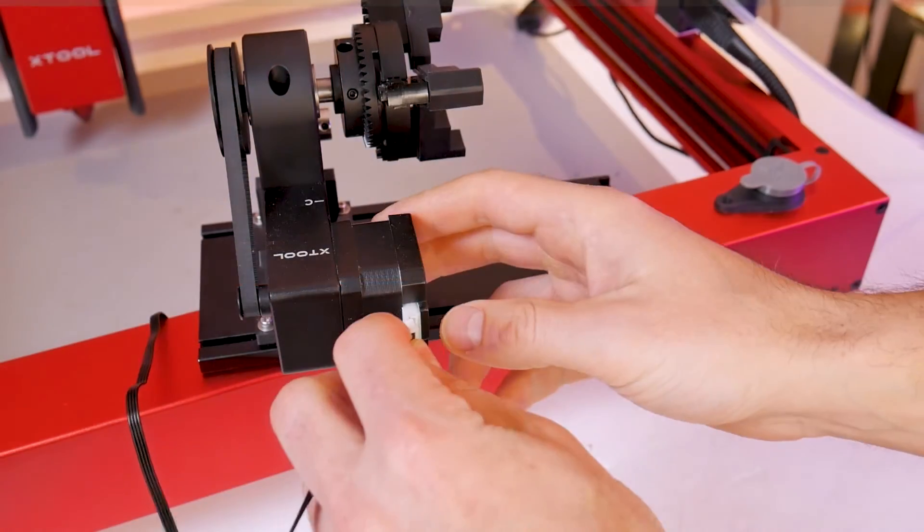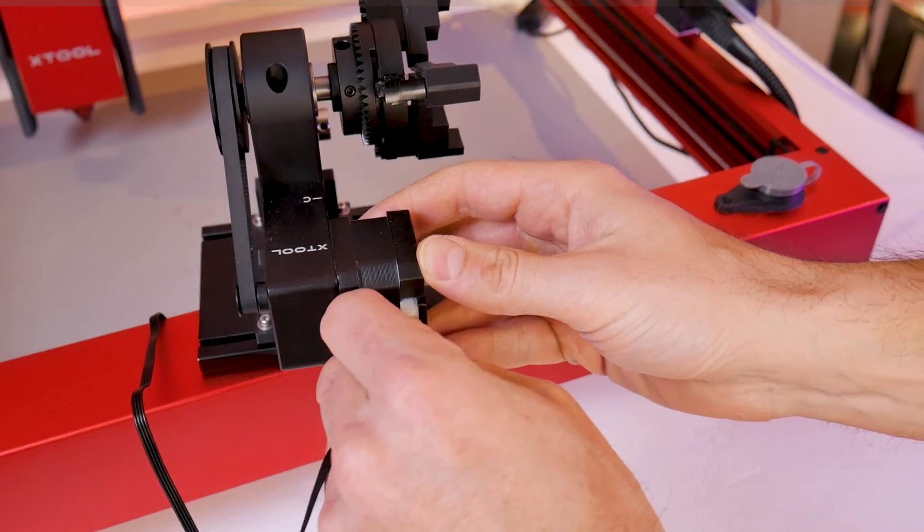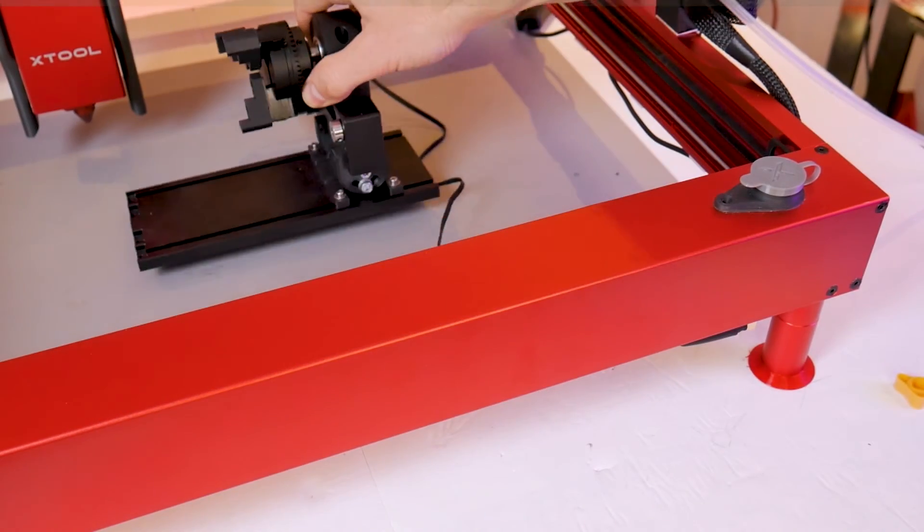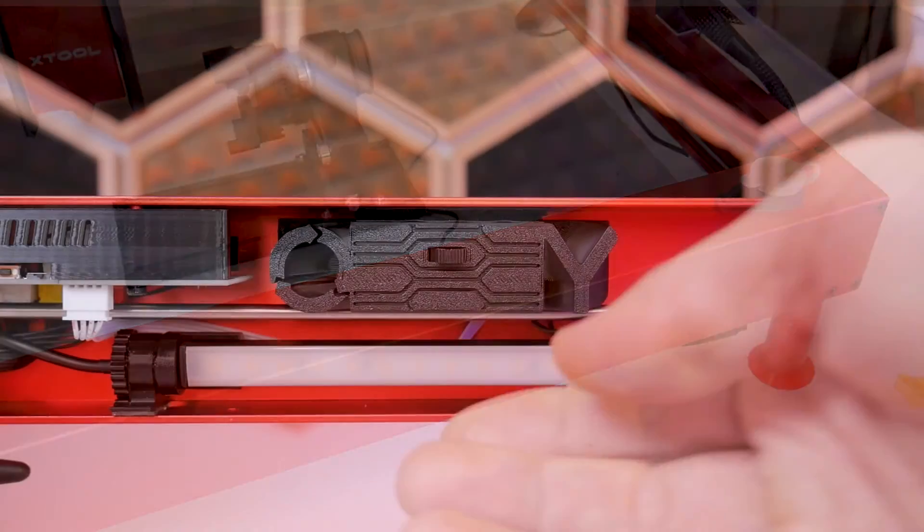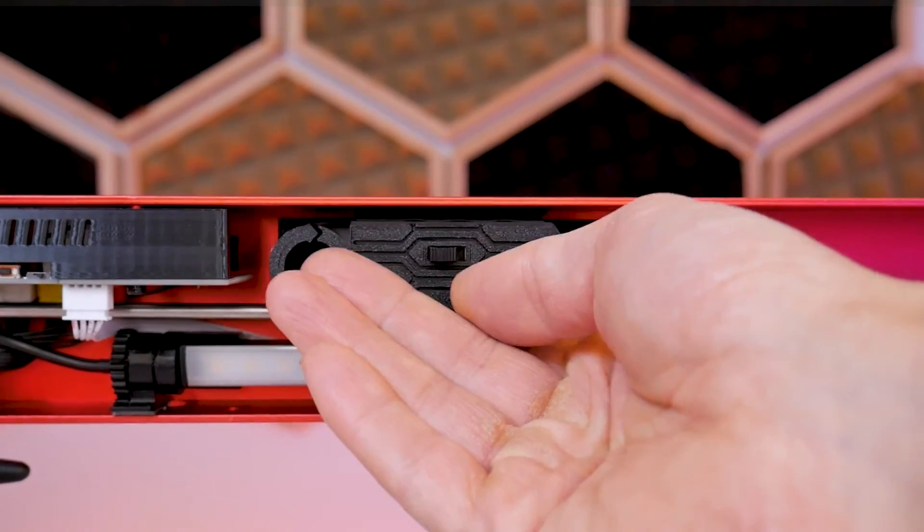Now if it's not already clear we'll do a quick walkthrough on how to use the switch. First you can plug in the RA2 if it's not already connected. With the machine power off, flip the switch over to the rotary side.